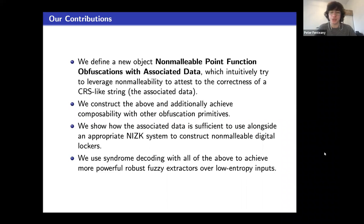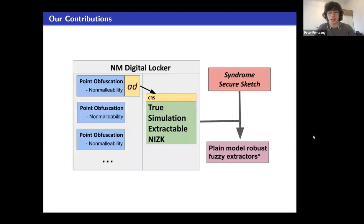And finally, we use syndrome decoding with all of the above to achieve more powerful robust fuzzy extractors in the plain model, specifically that are able to remain secure over low entropy inputs. This represents a little diagram of the roadmap, and you're welcome to come to the full talk if you want to see how we do this along the way.